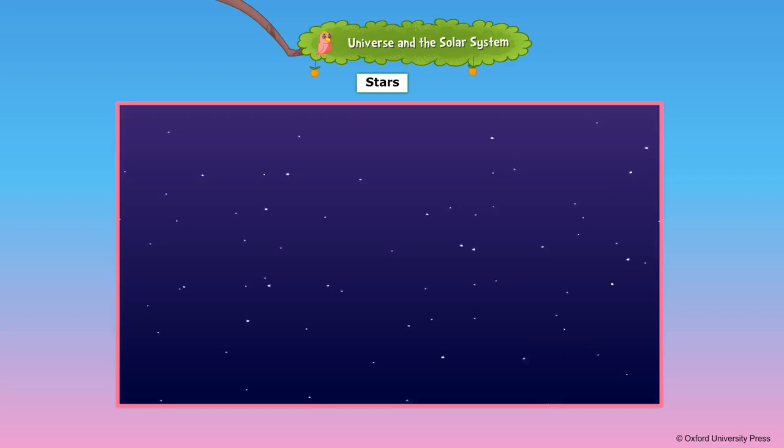Our sun is a star. There are many stars bigger than the sun. Solar systems, constellations and galaxies are made up of many stars.